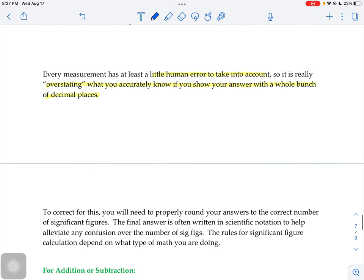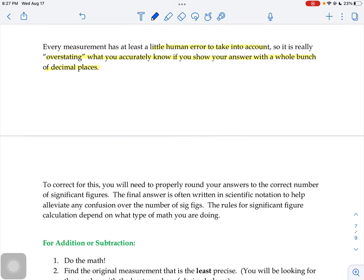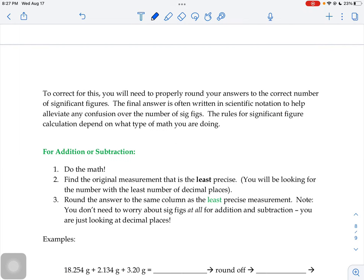If the problem is that we have error in all of our measurements, so we can't show a million decimal places, how do we know where to round? What should we round to? We're going to properly round our answers to the correct number of significant figures. The final answer can often be written in scientific notation to help alleviate any confusion with those weird zeros sometimes. But the rules for your calculations depend on the type of math you're doing.